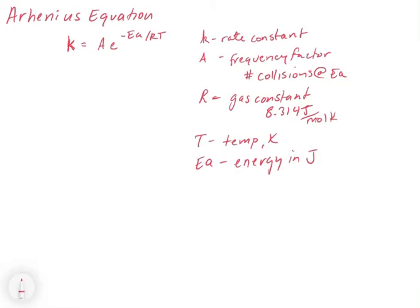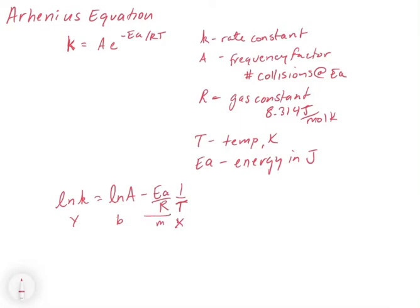We can reconfigure this using log rules. If we take the natural log of both sides, we get ln(k) equals ln(A) minus Ea over RT. We can think of this as a linear function where y equals mx plus b. The y is the natural log of the rate constant, the y-intercept is the natural log of A (the frequency factor), the slope is equal to minus Ea over R, and the independent variable x is 1 over T.